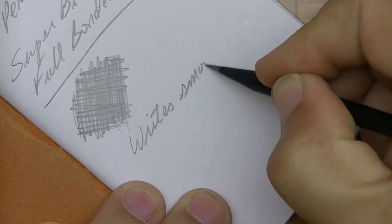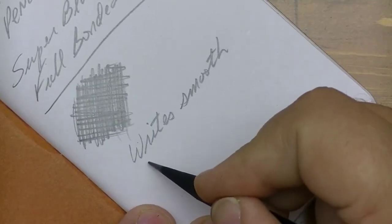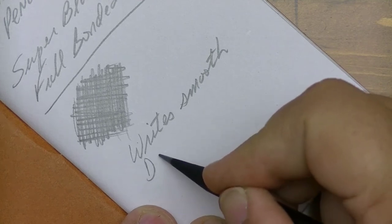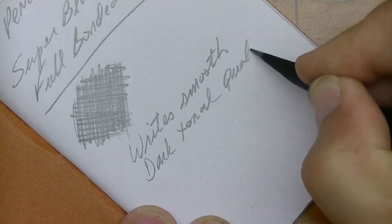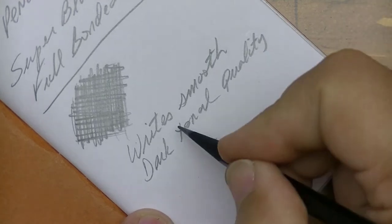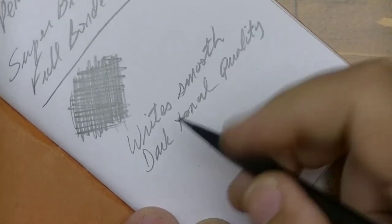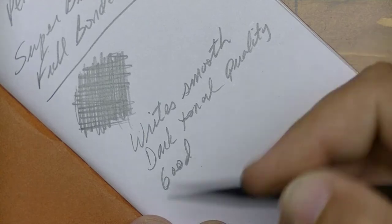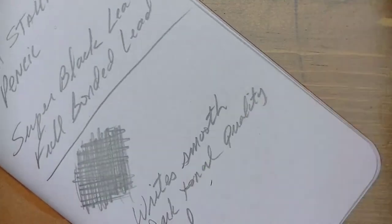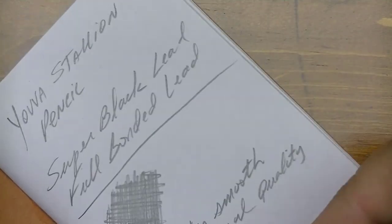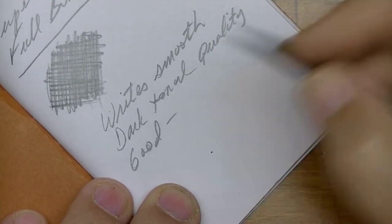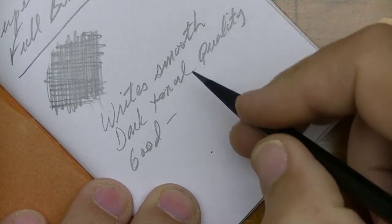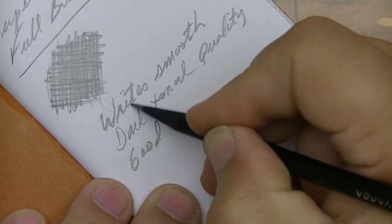How does it write? It writes smooth. It does appear to have a dark tonal quality to it. This paper is good paper. I'm going to comment about this pocket essentials. The paper is fine, nice little notebook. What I'll do is compare it to some other pencils and we'll see how it falls in line.